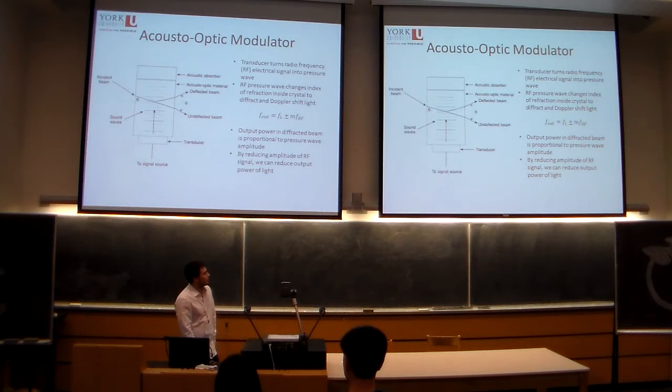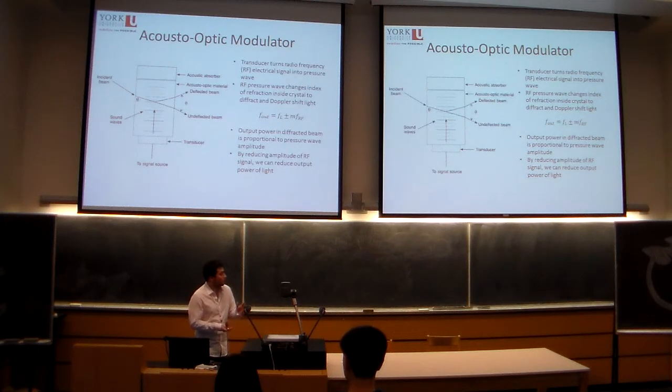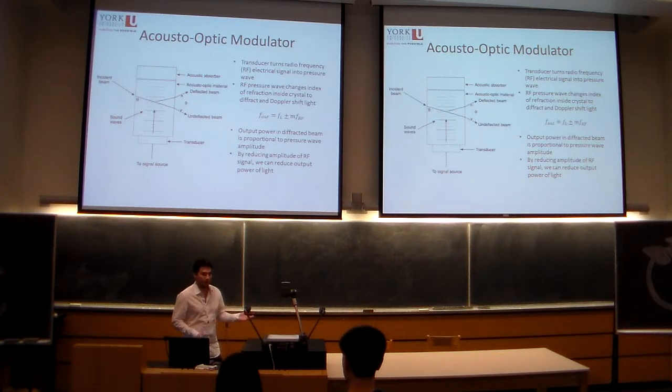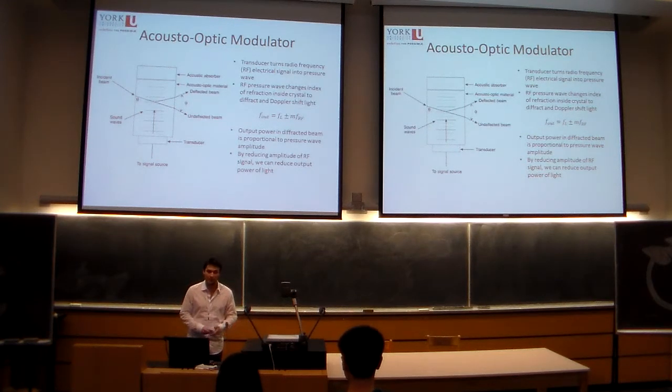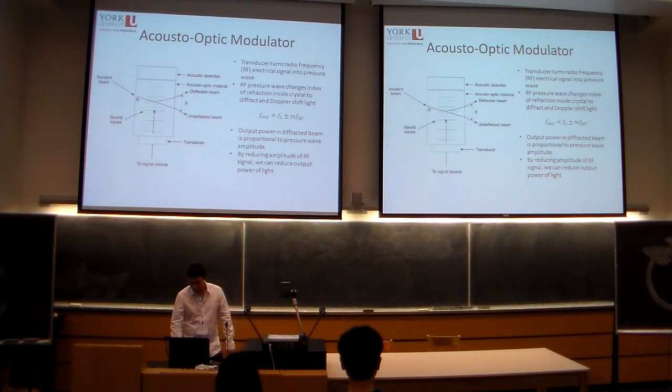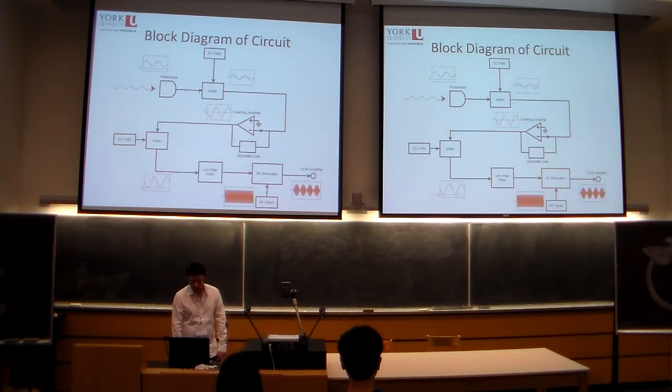The point of this is to modulate the amplitude of the RF signal based on the intensity fluctuations we observe in our messy laser beam. That's achieved by making a circuit. And I've made this circuit.